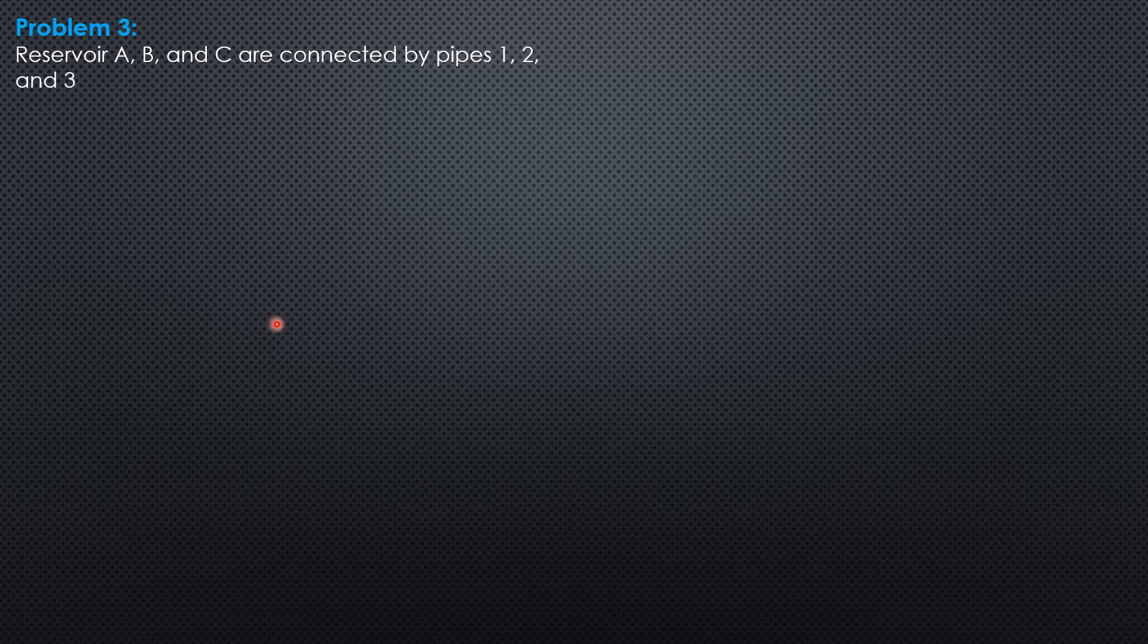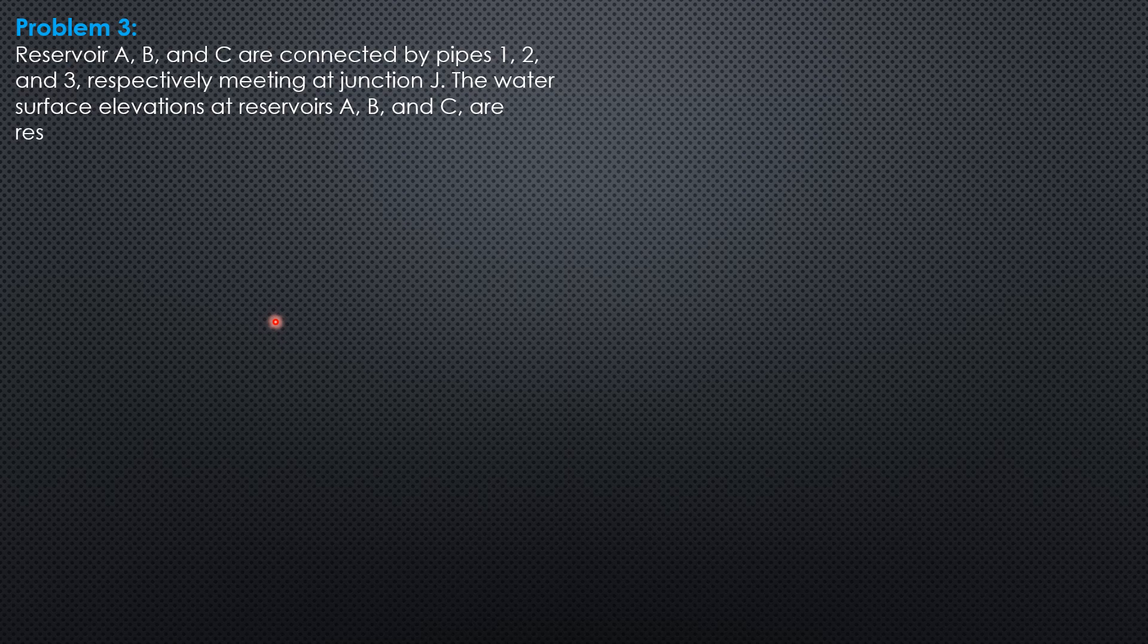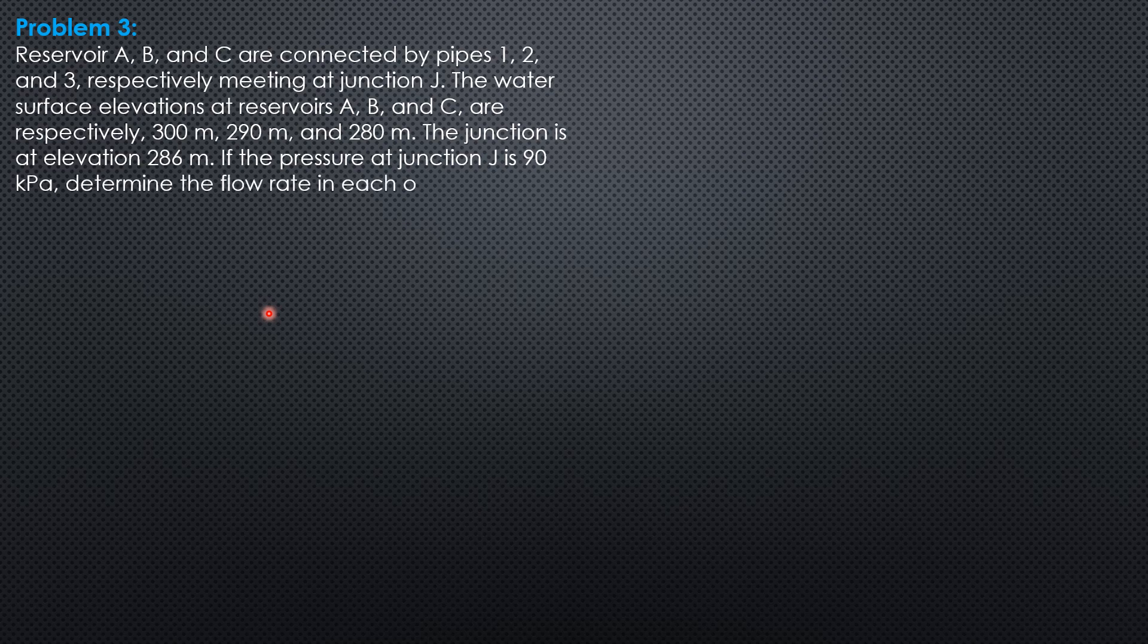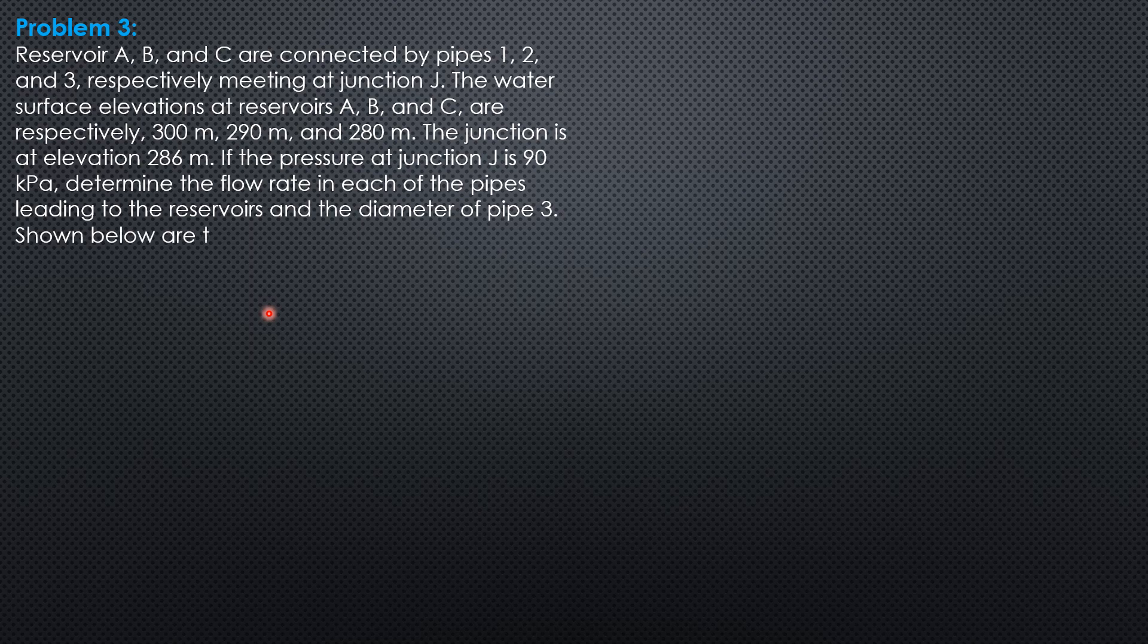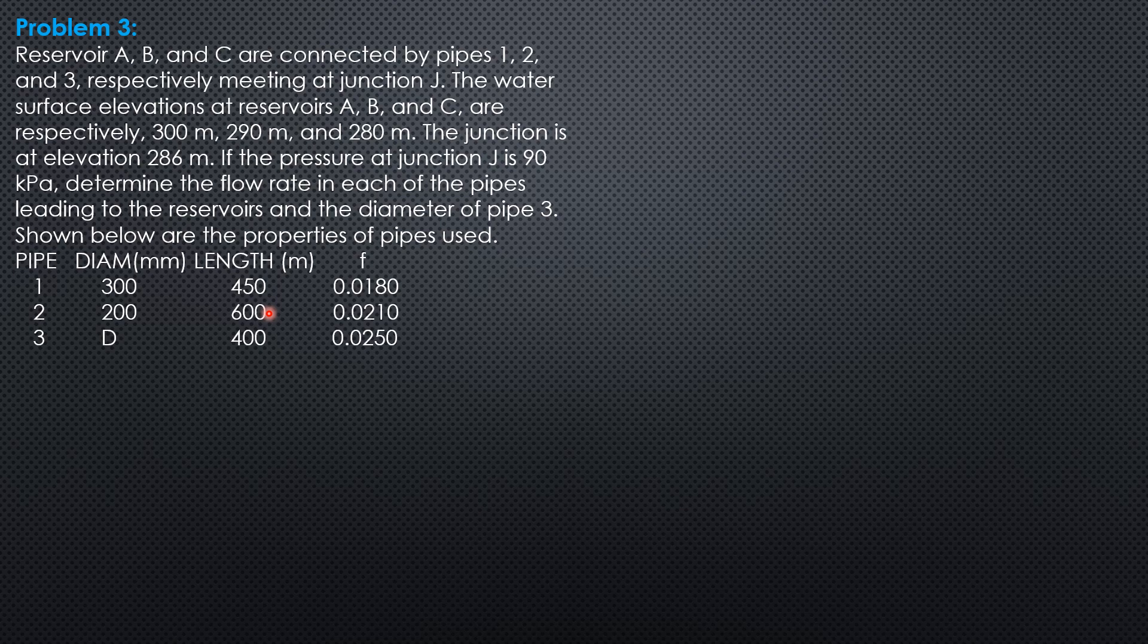Example 3. Reservoirs A, B, and C are connected by pipes 1, 2, and 3 respectively meeting at junction J. The water surface elevations at reservoirs A, B, and C are respectively 300 meters, 290 meters, and 280 meters. The junction is at elevation 286 meters. If the pressure at junction J is 90 kilopascals, determine the flow rate in each of the pipes leading to the reservoirs and the diameter of pipe 3. Shown below are the properties of pipes used.